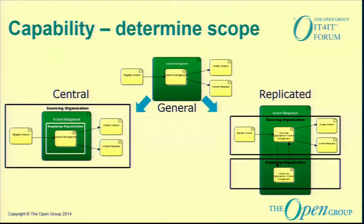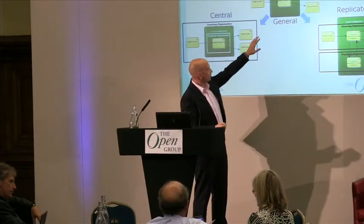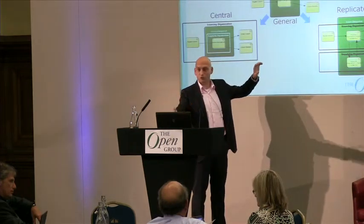First, I had to step back and understand what we're actually talking about. It's nice to have the functional component and artifact level, but I need something I can discuss with the business. They're not talking about functional components — they're saying 'I want you to manage IT and handle incidents.' So as one of the core elements in the reference architecture, we added capabilities — not to prescribe them, but to harvest from market standards like ITIL and COBIT and store those capabilities in a model linked to functional components.